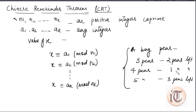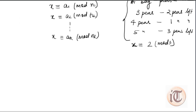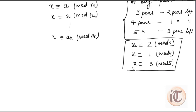First, we have to convert each statement into a congruence equation. If taking 3 pens leaves 2, this means x ≡ 2 (mod 3). Similarly, taking 4 pens and leaving 1 gives x ≡ 1 (mod 4). And taking 5 pens and leaving 3 gives x ≡ 3 (mod 5). With these congruence relationships, we can calculate the smallest number of pens, which is x, using the Chinese Remainder Theorem.